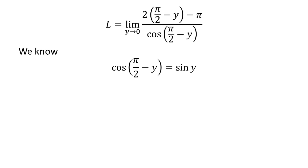We know cosine of (π/2 minus y) is equal to sine of y. The verification of this trigonometry identity has been explained in the video appearing in the upper right corner. The link of the video is also given in the description section.